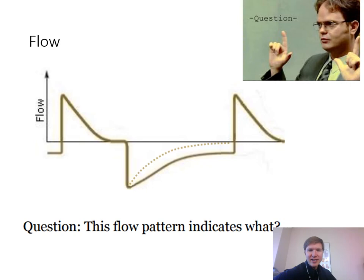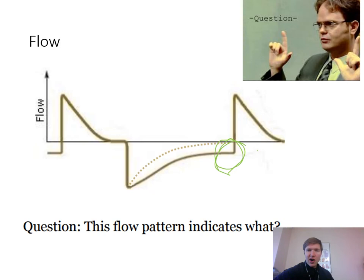Practice question: this flow pattern indicates what is going on? The pattern shows we're not coming back up to baseline — the exhalation is below baseline when the next breath starts. That's a sign of trapped gas, auto-PEEP or intrinsic PEEP, and slow lung units. Fixes include bronchodilators if the patient is wheezing or a known pulmonary patient, changing the respiratory rate down to allow more expiratory time, or decreasing inspiratory time by increasing flow rate.